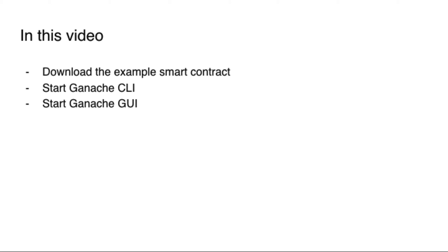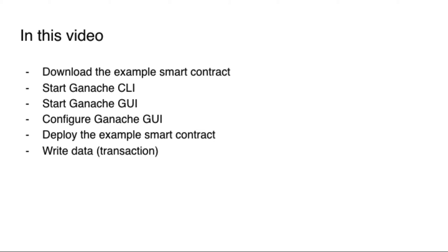First, we will need to download an example smart contract that we will use throughout this video. Then, we will start the Ganache CLI, which is the local Ethereum blockchain that we've been using in previous videos. Next, we're going to start the Ganache GUI, which is the visual tool we're going to learn during this video. We will configure Ganache GUI to work with the Ganache CLI we just started. Then, we will deploy the example smart contract to Ganache CLI and visualize it on Ganache GUI. Next, we will read data from this smart contract, write data, and also emit events and see how all of these are reflected on the Ganache GUI.